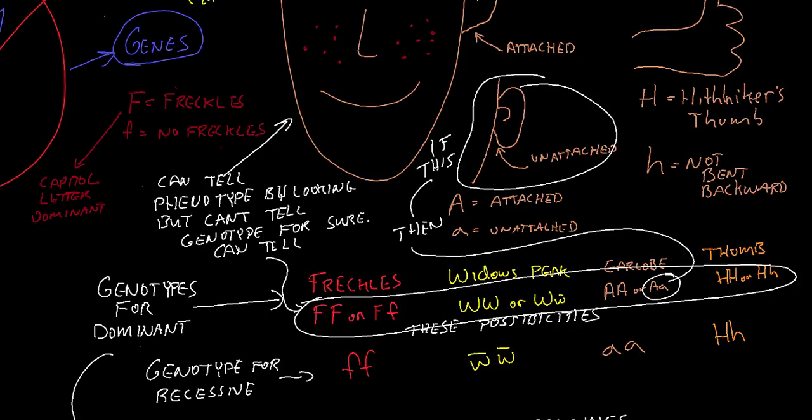So you can tell somebody's genotype regarding a trait if they show the recessive. But you can't know for certain their genotype if they have the dominant, because they could be homozygous dominant or they could be heterozygous dominant.